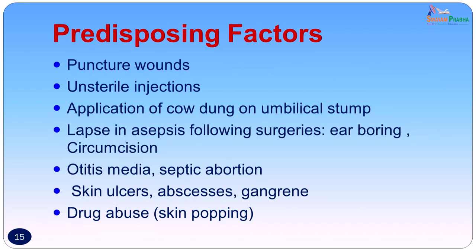The predisposing factors are that the wound must be a tetanus-prone wound — puncture wounds with great depth that create anaerobic conditions facilitating germination of spores are most prone. Other predisposing factors include unsterile injections, application of cow dung on the umbilical stump, lapses in asepsis following surgeries such as ear-boring or circumcision, otitis media, septic abortions, skin ulcers, abscesses, gangrene, and commonly in patients who abuse drugs or practice skin-popping.